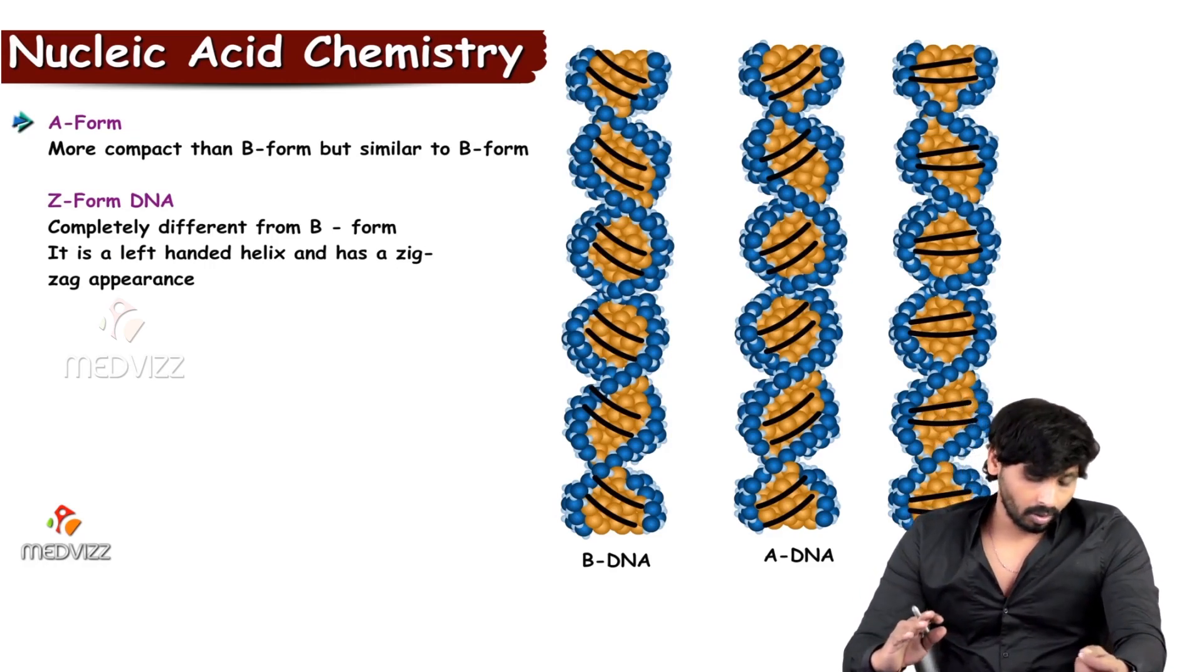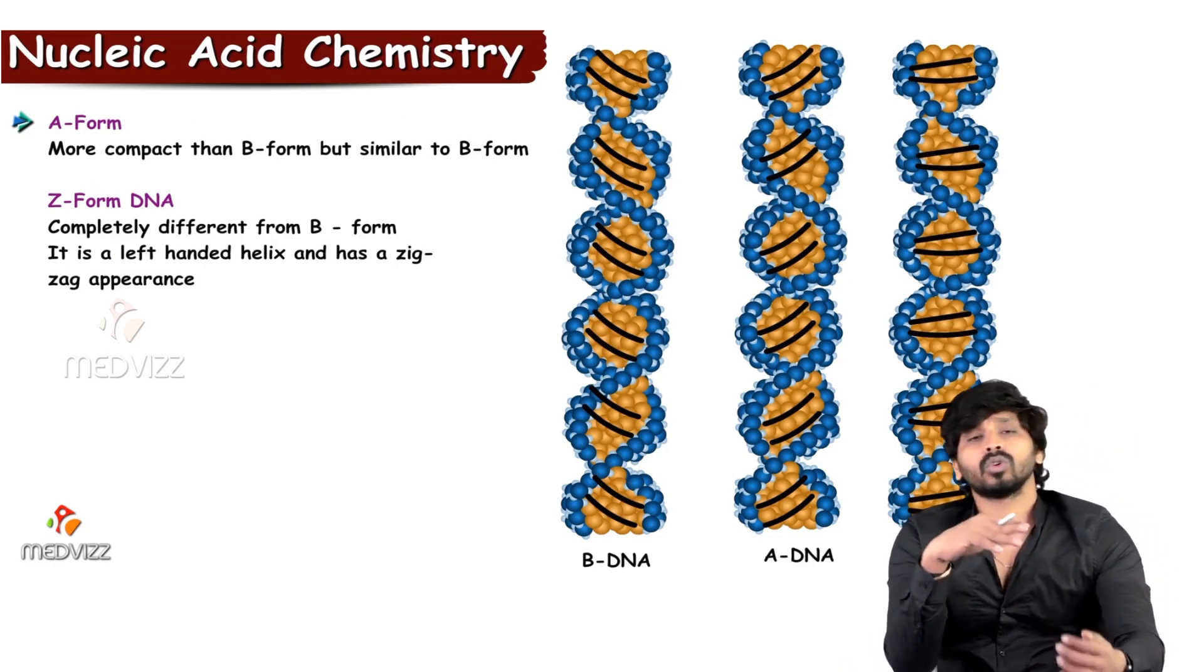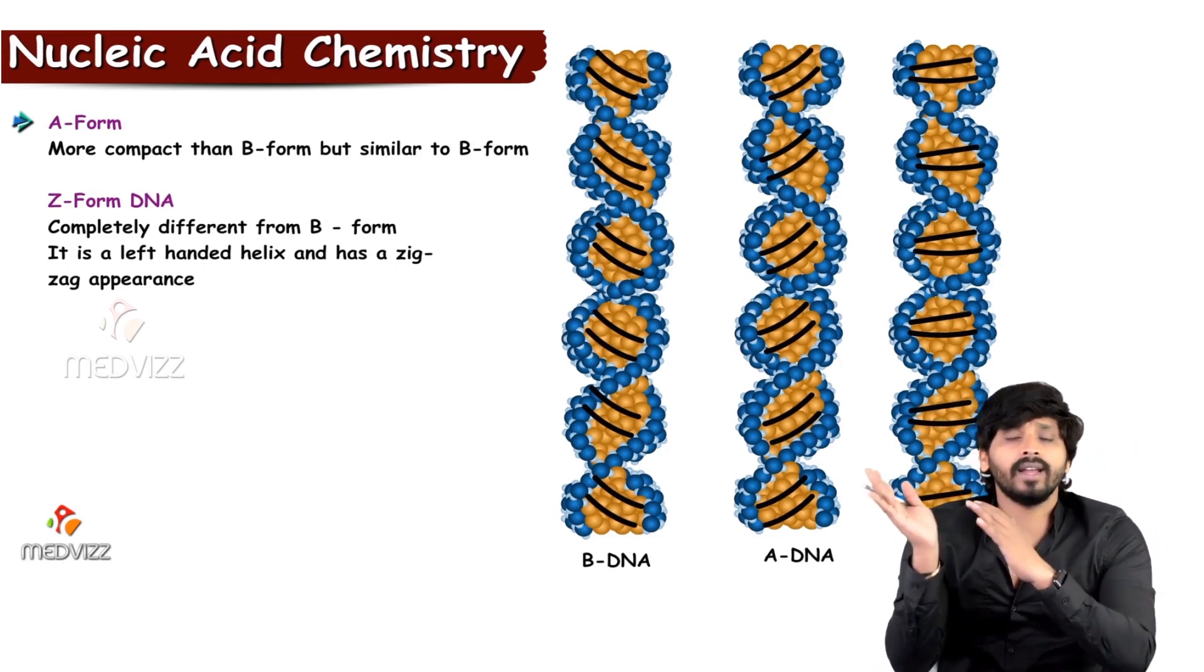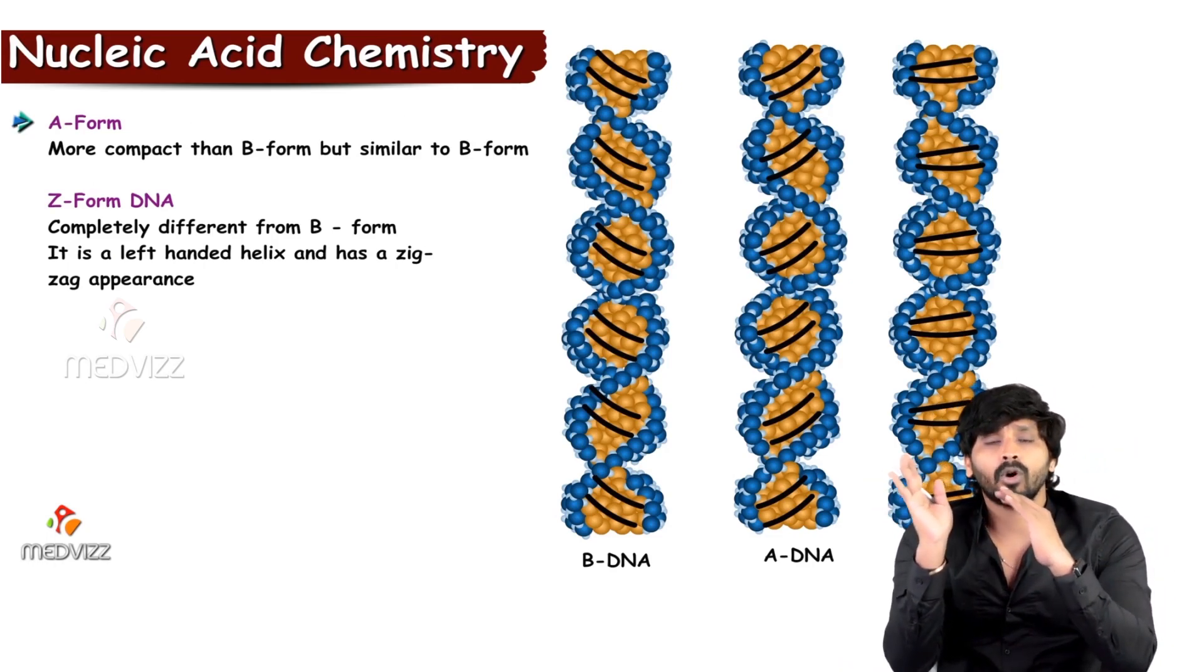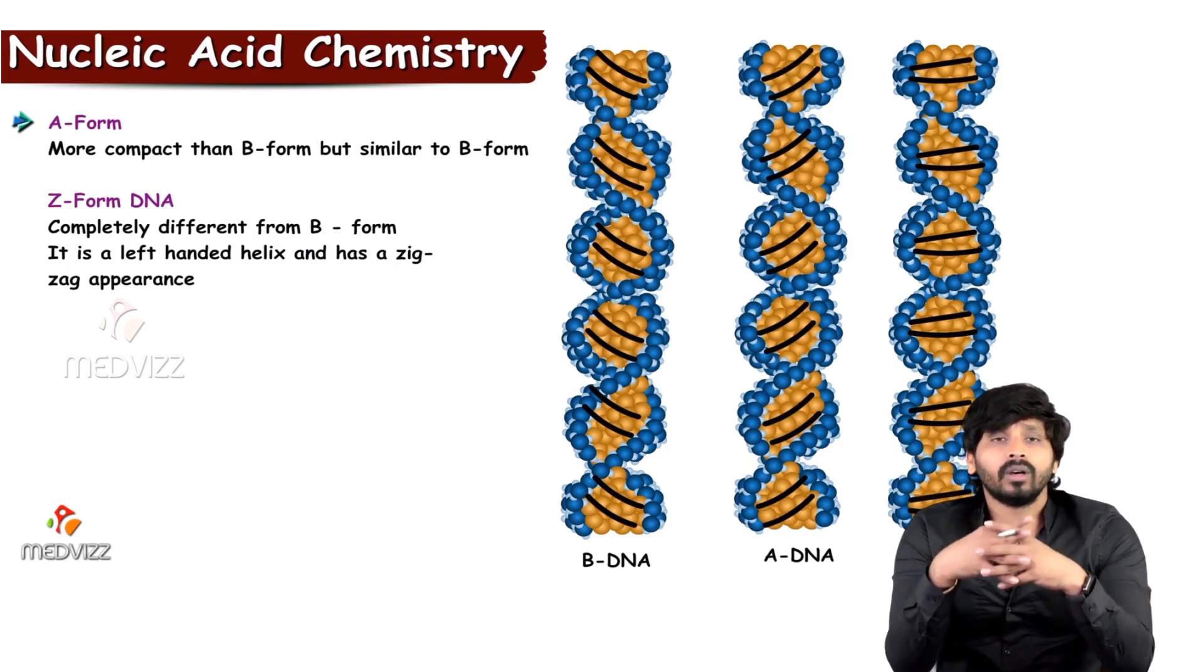A form is also similar to B form of DNA. A and B both are right-handed helical in nature, but the prominent difference is with the Z form of DNA—it is a left-handed helical.